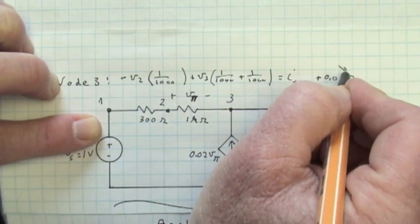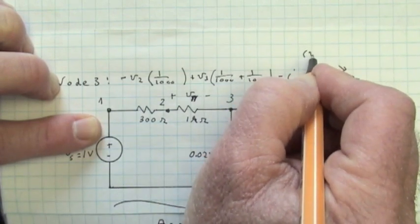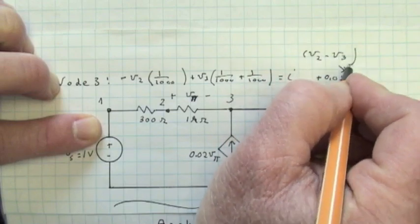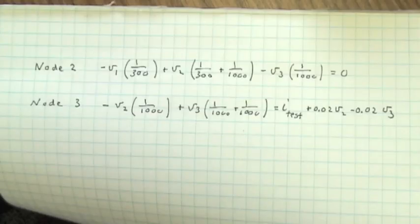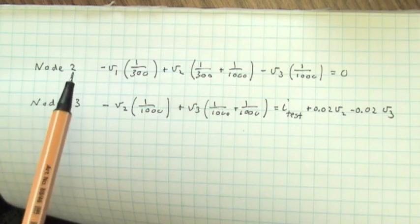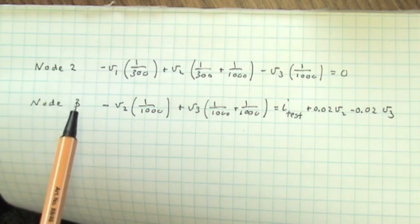So let's replace V pi by the quantity node voltage 2 minus node voltage 3. With that, here are our node voltage equations at node 2 and at node 3.